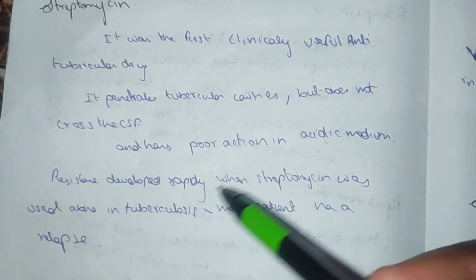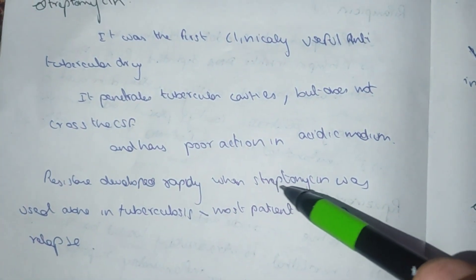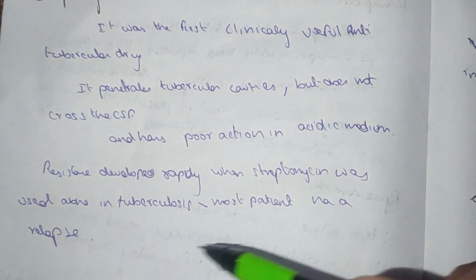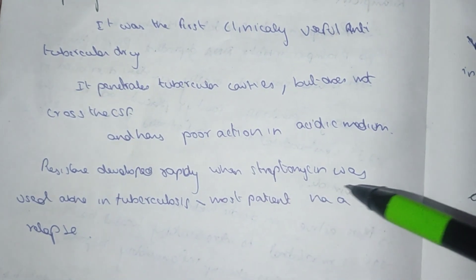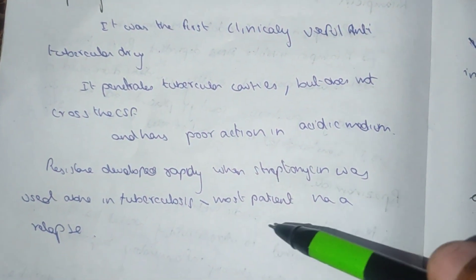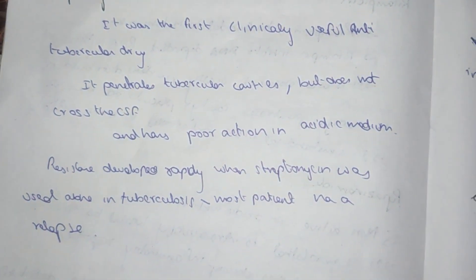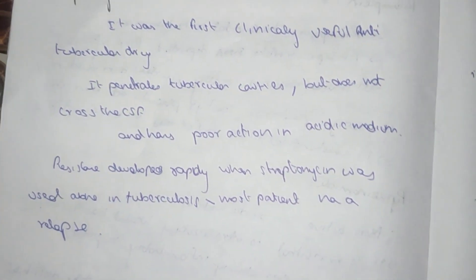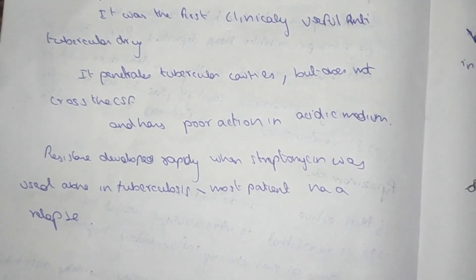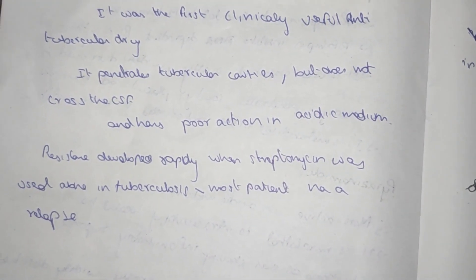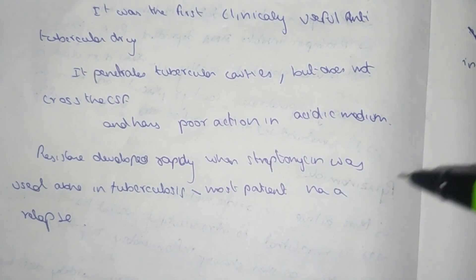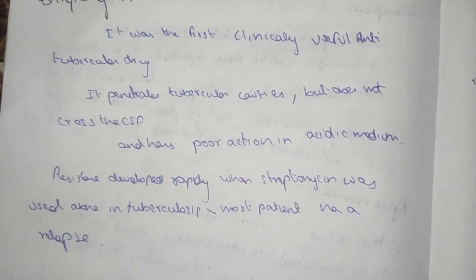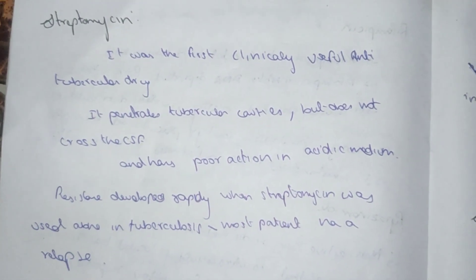Ethambutol penetrates into the tubercular cavities but does not cross the CSF. It has poor action in acidic medium. Resistance develops when streptomycin is used alone in tuberculosis, and most patients have relapses with monotherapy.